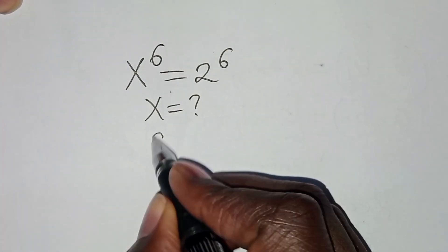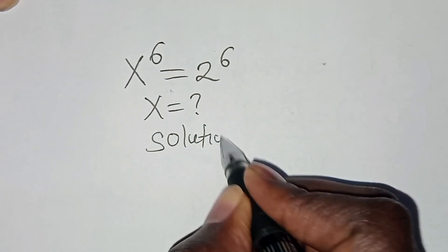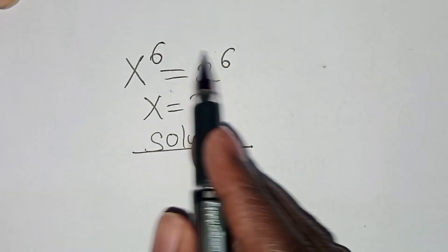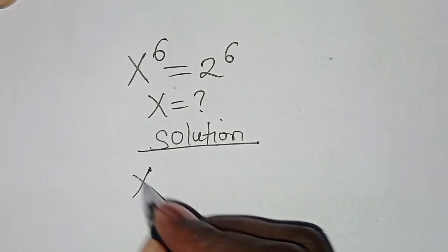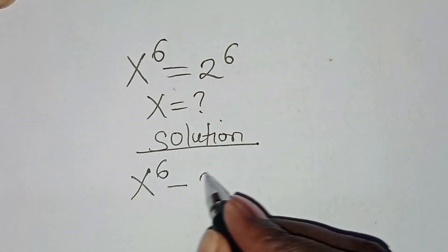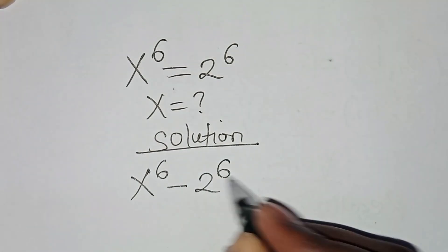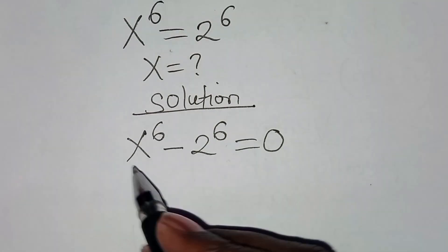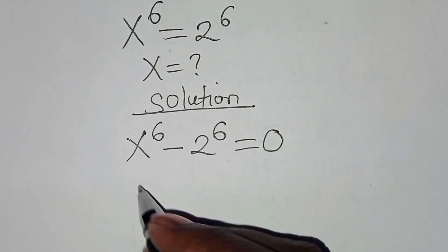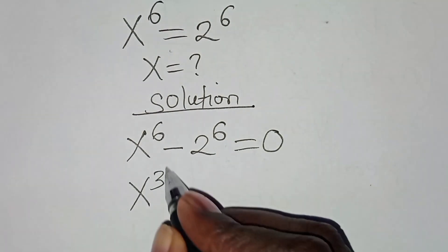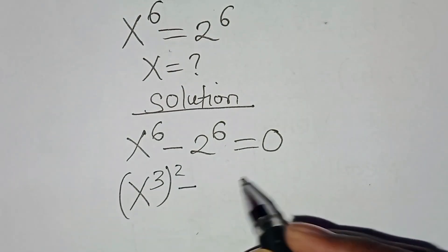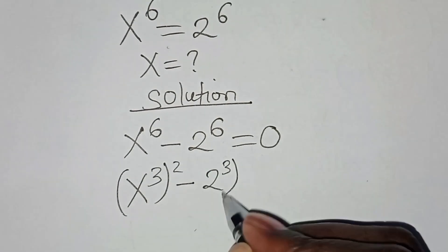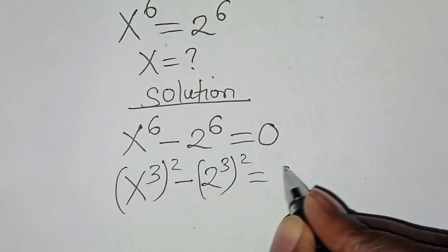Solution. Let's take 2 to the power 6 on the left-hand side. We will have x to the power 6 subtract 2 to the power 6, equal to 0. We can express x to the power 6 as x to the power 3 squared, subtract 2 to the power 6, which we can express as 2 to the power 3 squared. This is equal to 0.